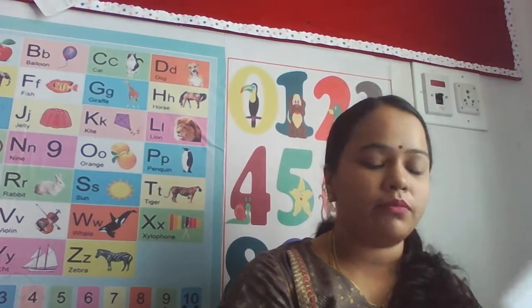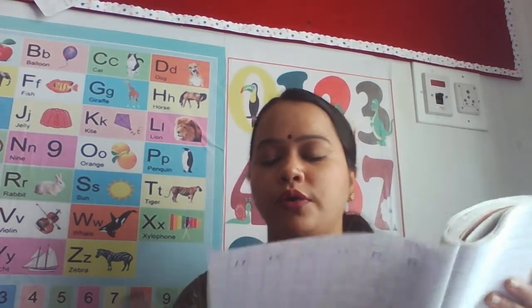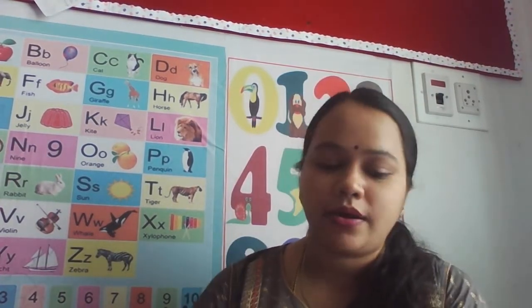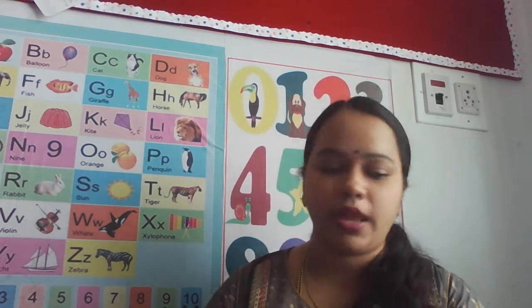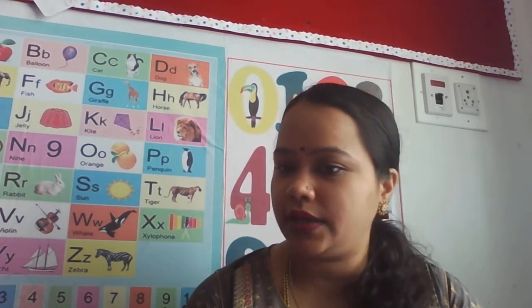This is one homework. And one more homework is in your box book: write one to seventeen numbers two times in your box book. Write it two times — one to seventeen numbers. This is about today's class. Thank you.